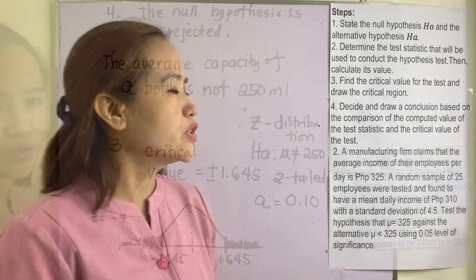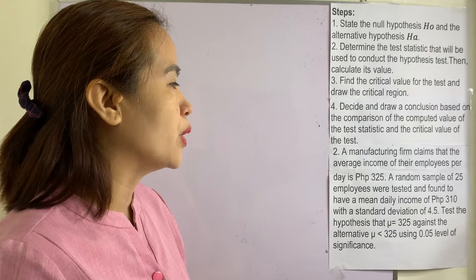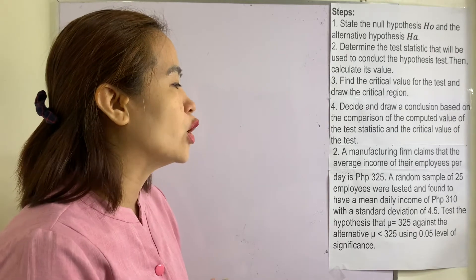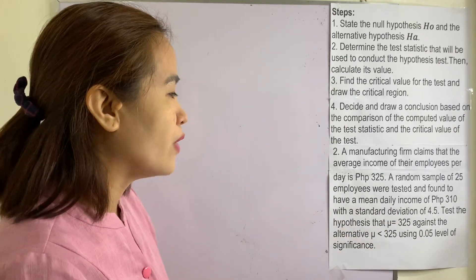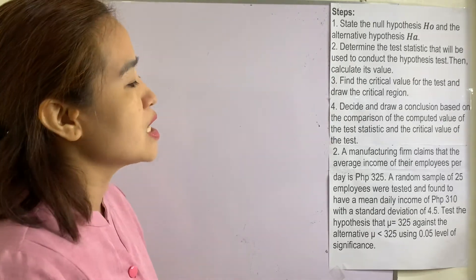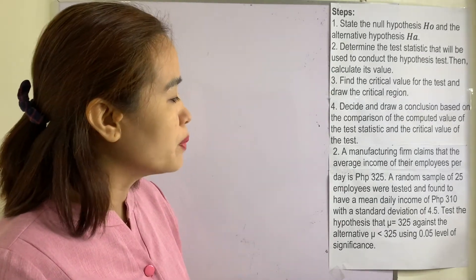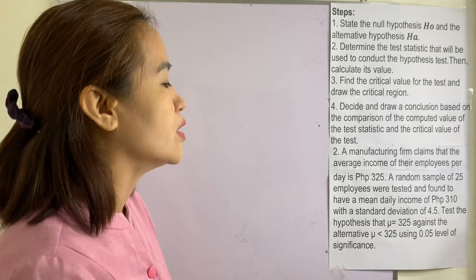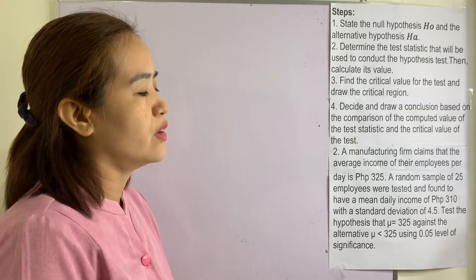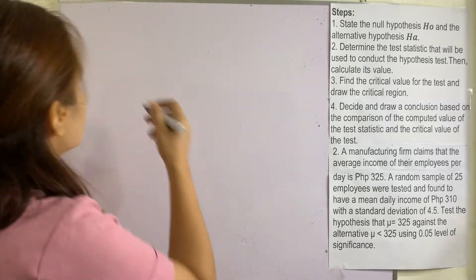Example number 2: A manufacturing firm claims that the average income of their employees per day is 325 pesos. A random sample of 25 employees were tested and found to have a mean daily income of 310 pesos with a standard deviation of 4.5. Test the hypothesis that mu equals 325 against the alternative that mu is less than 325 using 0.05 level of significance.